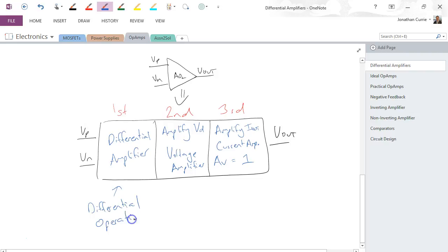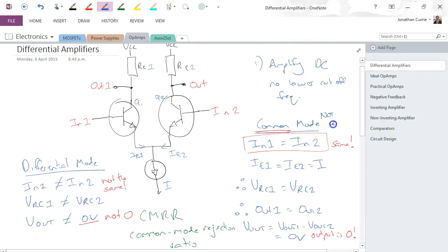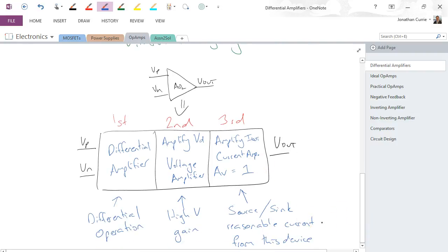So this gives us the differential operation. Second stage gives us the high voltage gain. And the third stage gives us the ability to source or sink reasonable milliamps, depending on the op-amp, maybe even less reasonable current from this device. So our op-amp can be described using three different stages where the first is this differential amplifier circuit and common mode is not normally used. Differential mode is what we're using. We then amplify the difference to get a very large voltage gain, and therefore to be able to supply or sink current, we then have a current amplifier on the output.